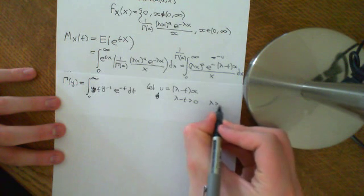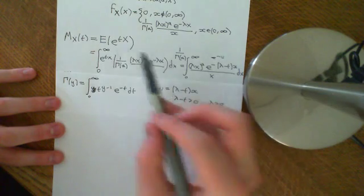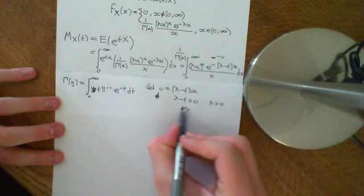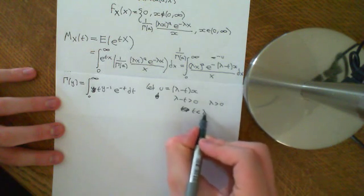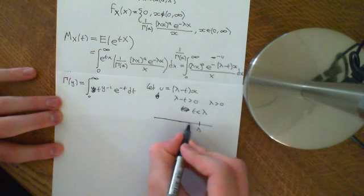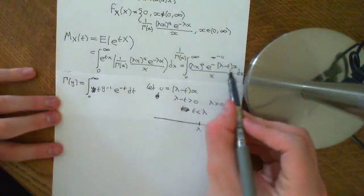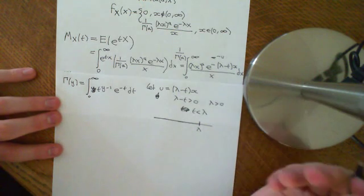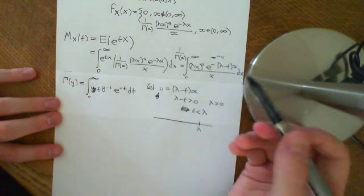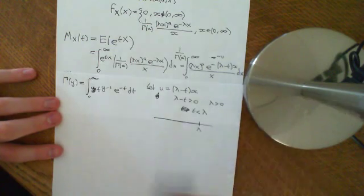We know from the properties of the gamma distribution that the lambda parameter is greater than 0. What we don't know is that t is also going to be greater than 0. Basically, this moment generating function isn't going to be defined unless lambda minus t is greater than 0, i.e. t needs to be less than lambda. So this moment generating function is going to be defined on all real numbers less than lambda, but not for those to the right of it. That's okay — we don't need the moment generating function to be defined on the entire real numbers.